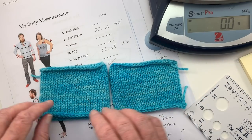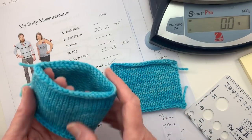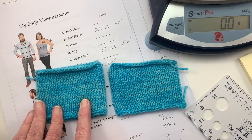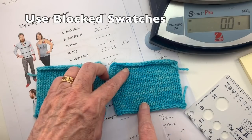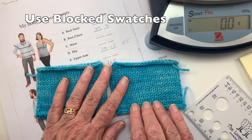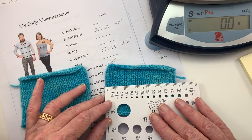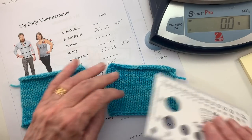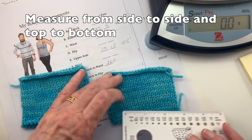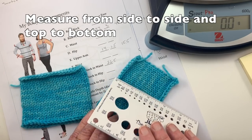Then I blocked the swatches. This one was knit in the round. This one has twice as many stitches cast on, but knit for the same number of rows as this one. So the first thing we will do is measure these swatches from the width and the length.